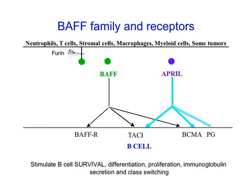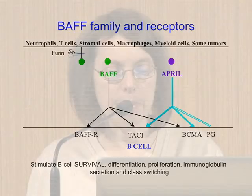BAF and APRIL bind to several different receptors on the surface of B cells, including BAF receptor, TACI, and BCMA. BAF binds to all three of these receptors, whereas APRIL binds only to TACI and BCMA. APRIL also binds to proteoglycans on the cell surface that serve to oligomerize APRIL and make it bind better to its receptors.